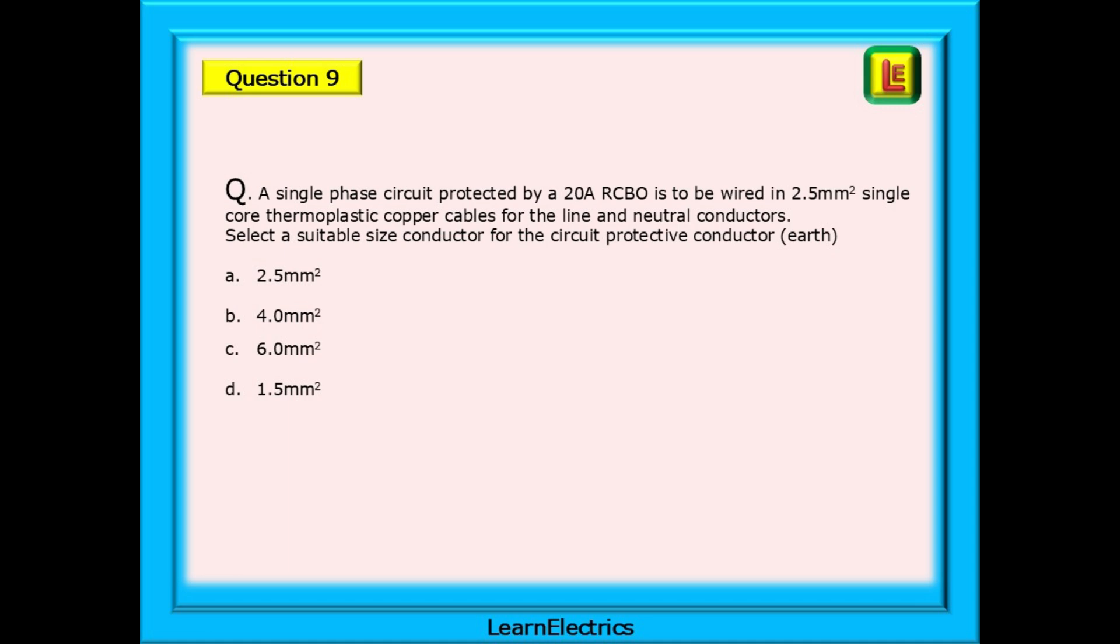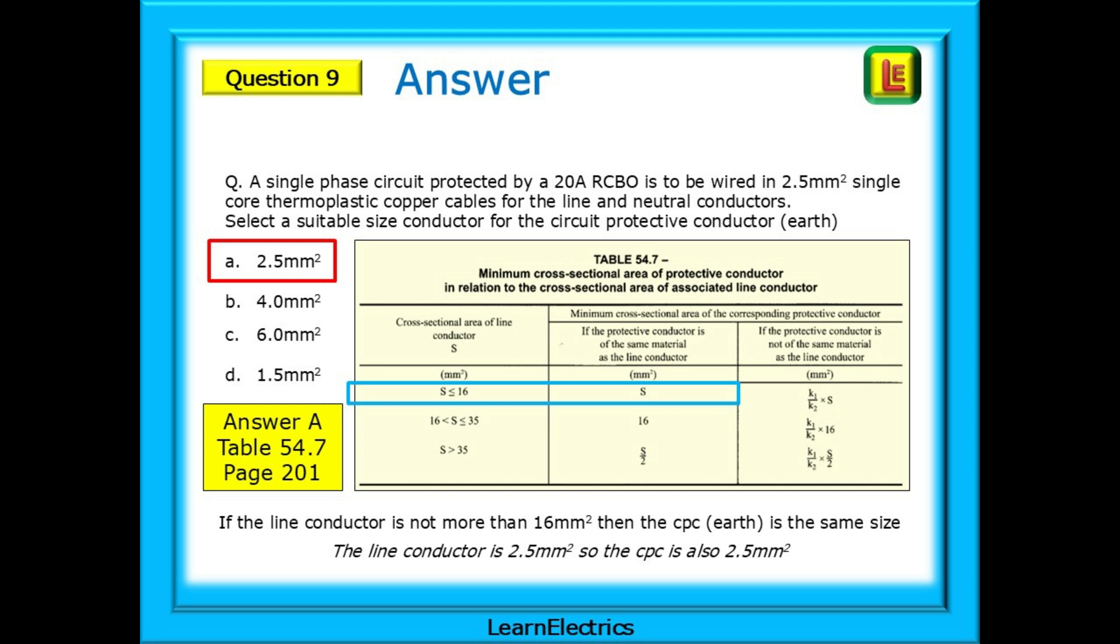Number 9 asks, A single phase circuit that is protected by a 20 amp RCBO is to be wired in 2.5 square millimetre single core thermoplastic copper cables for the line and neutral conductors. Select a suitable size conductor for the circuit protective conductor, the earth, from the relevant table.